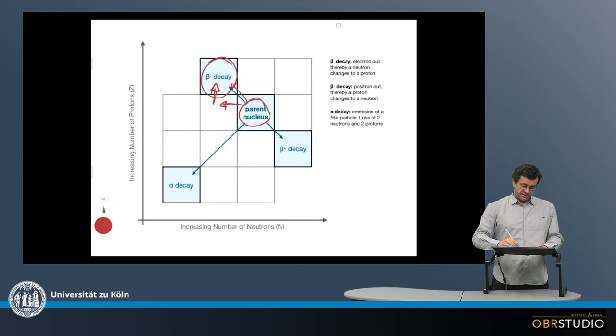Then similarly, the second decay is the beta-plus decay. So now a positive charge leaves the nucleus, so it must gain or there must be some negative charge then in the nucleus. But because positive is going, which means this is basically the positive charge of a proton, which then changes into a neutron. So the proton, the positive charge is removed, and then the neutron forms.